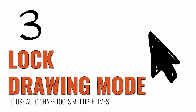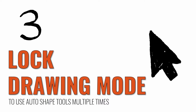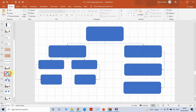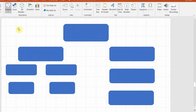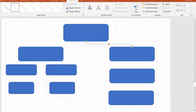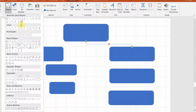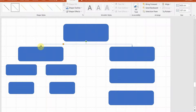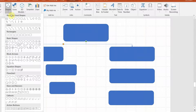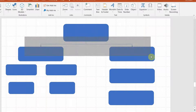Let's come to our third tool: how to use auto shape tools multiple times using the Lock Drawing Mode. It's a really interesting tool for those who make organizational charts, flow charts, or any corporate presentation involving charts. For example, if I want to connect boxes to each other I'll go to auto shapes, choose the right elbow arrow, and start connecting the boxes. To connect the next box I would again have to go to shapes, locate the tool, and use it — and using it again and again can be quite a painful process.